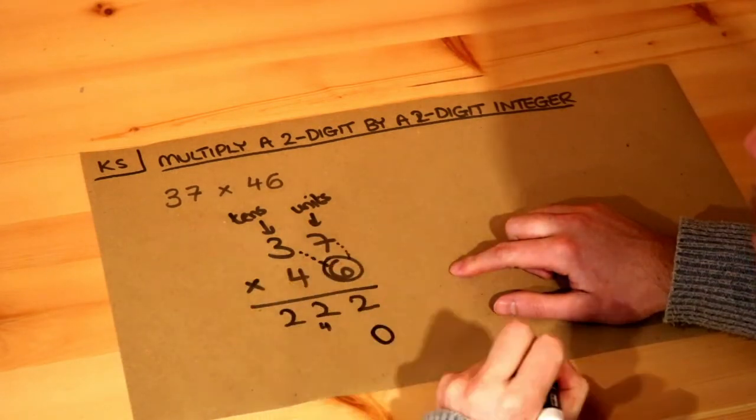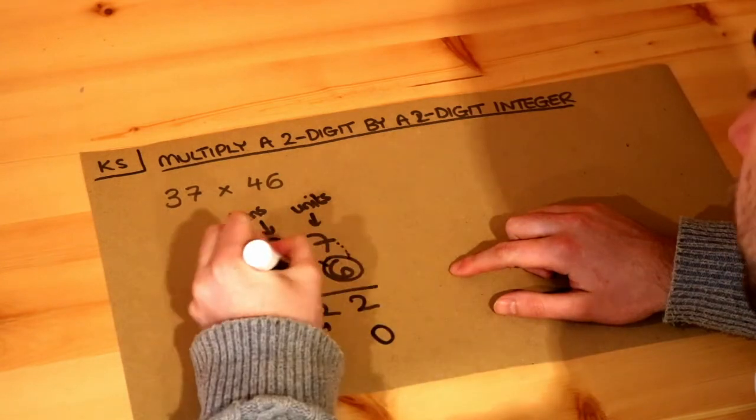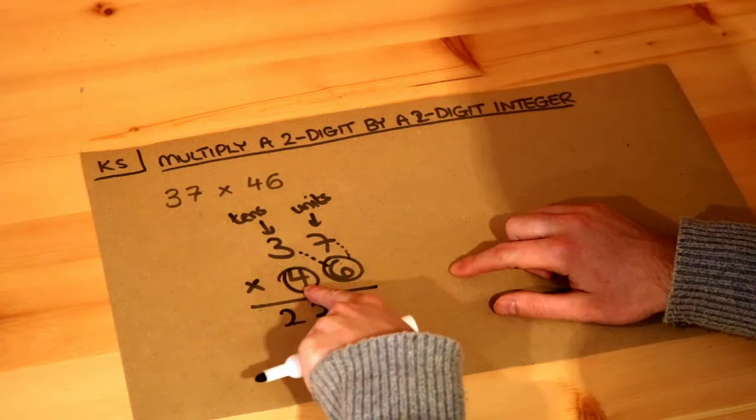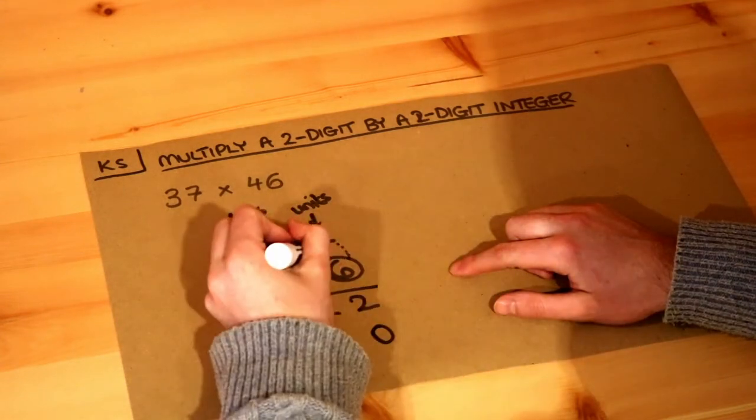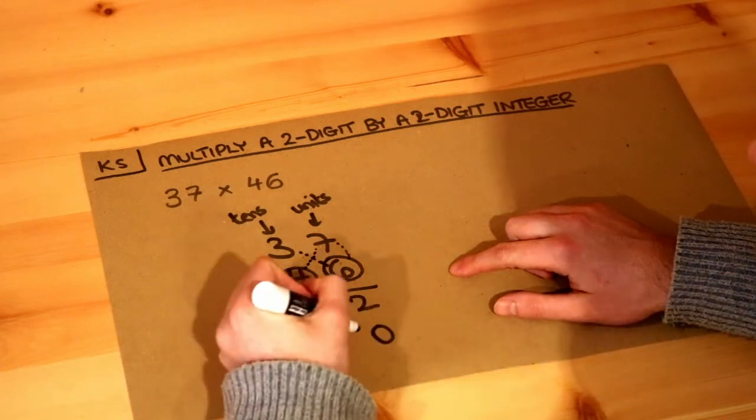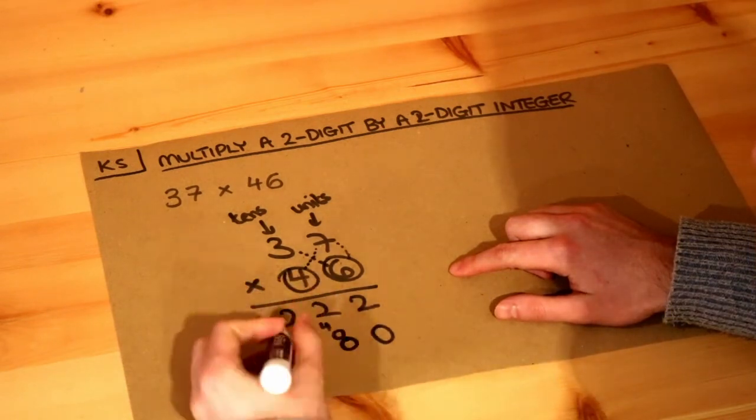Now we're going to do each of these digits times 4—37 times 4. We do 7 times 4 first. 7 times 4 is 28, so we put 8 and carry the 2.